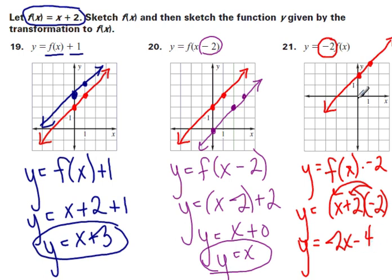So my new intercept is going to be at negative 4, 1, 2, 3, 4 down. And it's going to have a slope of negative 2. So if I go up 2, I go to the left 1, up 2, left 1, and this would be my line.